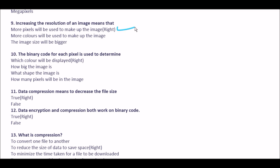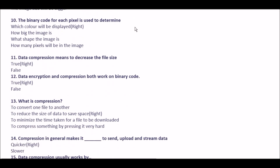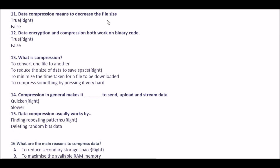Next question: the binary code for each pixel is used to determine — option A which color will be displayed, option B how big the image is, option C what shape the image is, option D how many pixels will be displayed in the image. The right answer is option A: which color will be displayed.